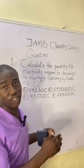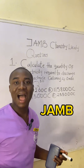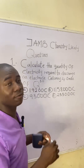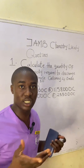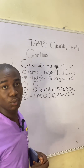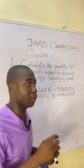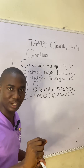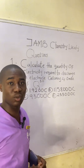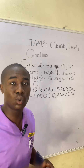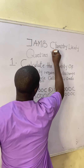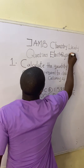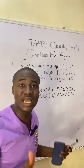If you came across this question in the JAM exam, here is how to solve it — it is very easy. First of all, you have to know the topic this question is from. The question says 'calculate the quantity of electricity.' When I hear that, my mind goes to the topic in chemistry called electrolysis. So this question is from the topic of electrolysis.